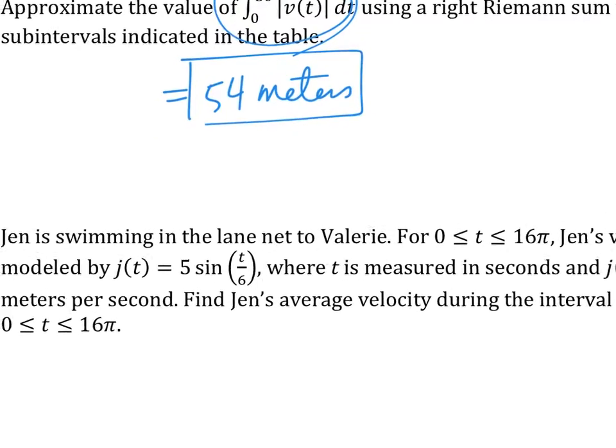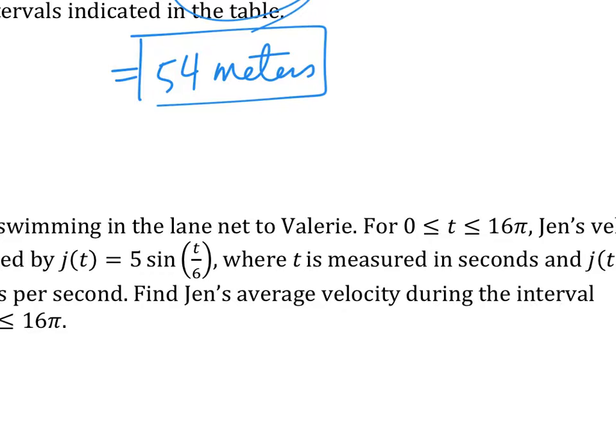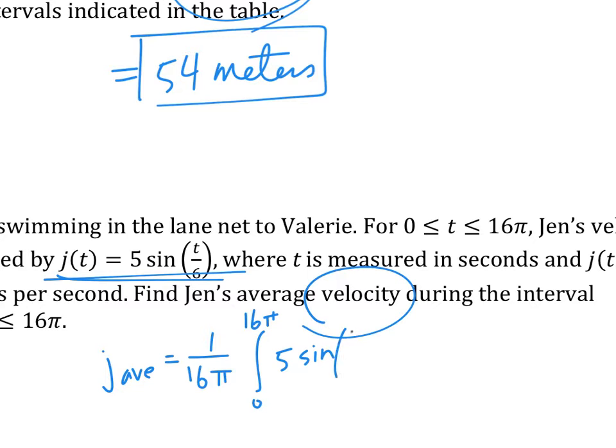Last one. Find the average, Jen's average velocity. Jen is swimming next to Valerie, and she has this velocity equation. Find the average velocity. Please be careful. Average velocity, not average speed. If it says average speed, you have to do something different, okay? Just average velocity. Okay, so Jen's average velocity is 1 over 16 pi, integral from 0 to 16 pi of her speed, which is 45 over 16 pi meters per second. So you could do this without a calculator.